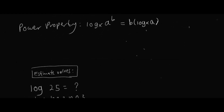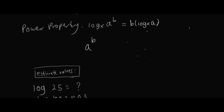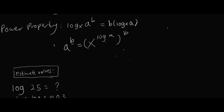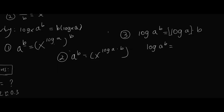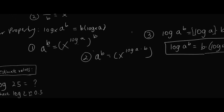The final property is the power rule. So for A to the power of B, we substitute A as x to the power of log A, and everything is raised to the power of B. Using exponent properties, A to the power of B is equivalent to x to the power of log A times B. Taking the log of both sides, log of A to the power of B equals B times log A. That is our power rule.